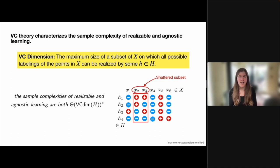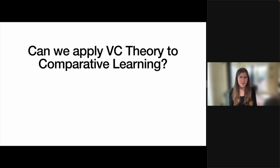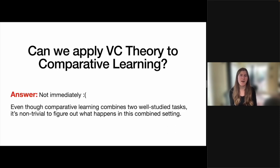In the diagram on the right, H has a VC dimension of 2 because it can realize every possible labeling of x2 and x3, but cannot realize all the labelings of any three points. So with this information in hand, it would be natural to assume that because comparative learning is a combination of realizable and agnostic learning tasks, there should be some way to combine information about the sample complexities of learning the source and benchmark classes to make a conclusion about the combined comparative learning task. However, it turns out that things are not quite as simple as we might hope.